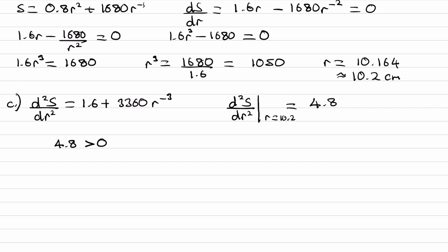4.8 is positive. That means that the rate of change of gradient is positive. That's what d²s/dr² tells us. If the rate of change of the gradient is positive, that means it's increasing. It will be increasing around a local minimum.